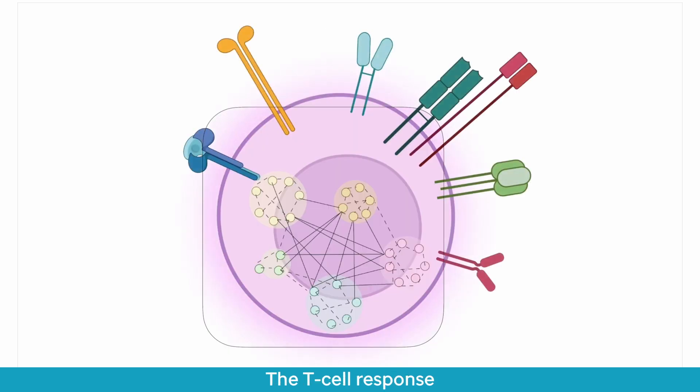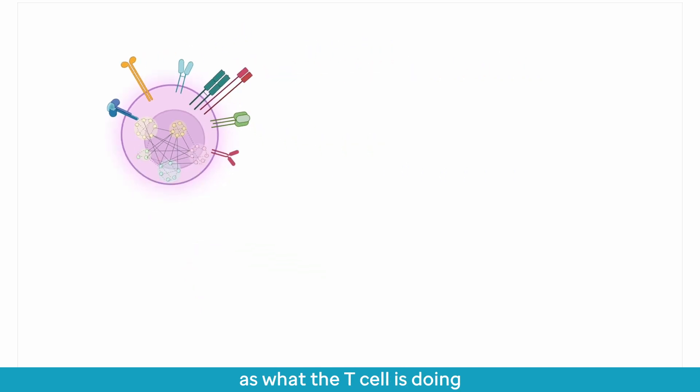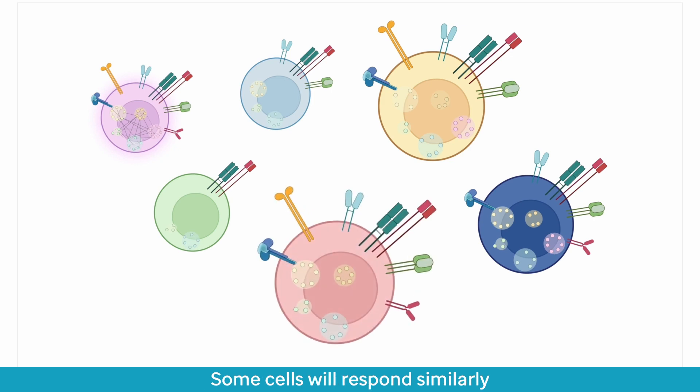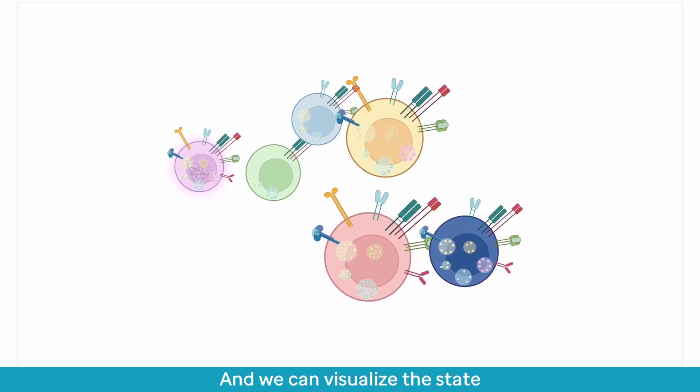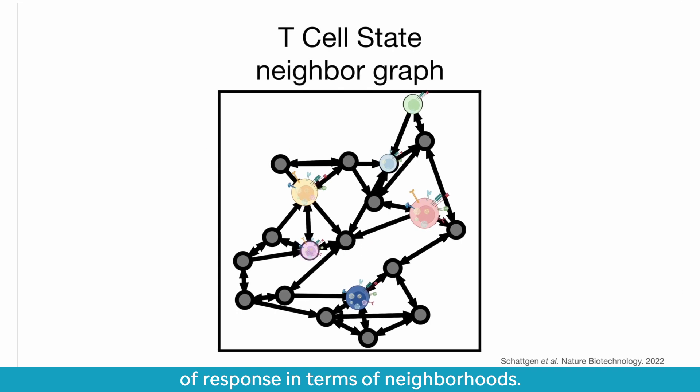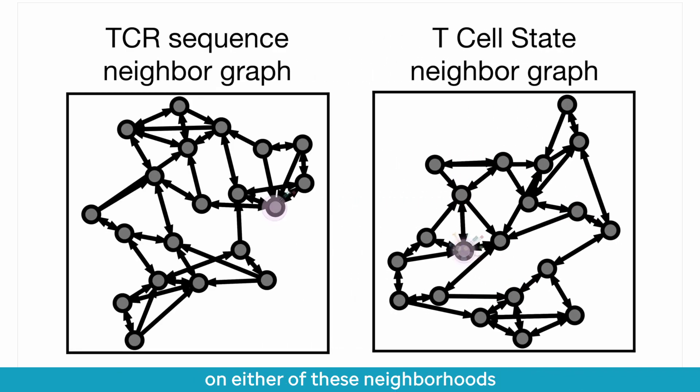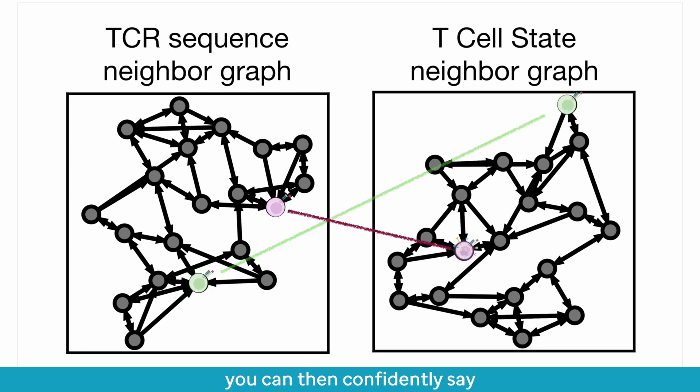The T cell response state can be thought of as what the T cell is doing at any given point in time compared to other T cells around it. Some cells will respond similarly and others won't, and we can visualize the state of response in terms of neighborhoods. If you know where a T cell is compared to other T cells on either of these neighborhoods and then link them together, you can then confidently say if a T cell that seems like it should be responding is responding or not.